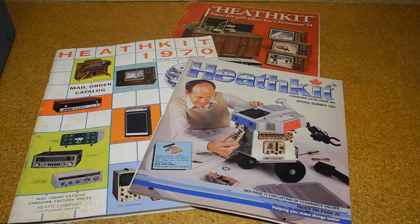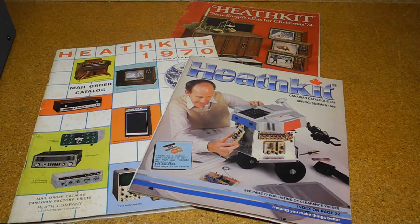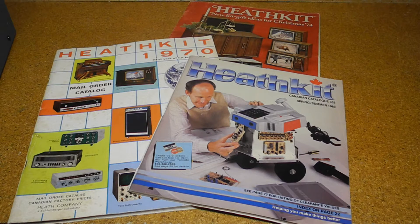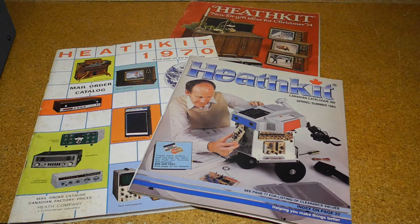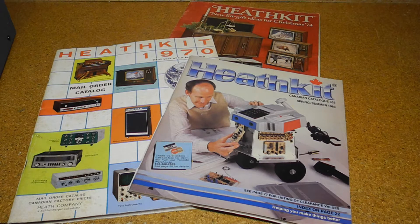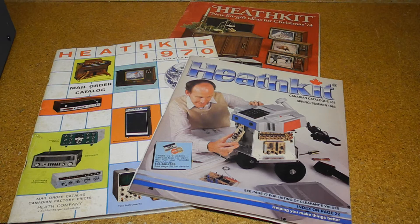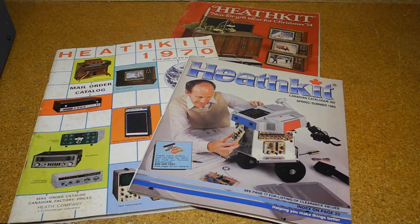As you may know, Heathkit was a manufacturer of electronics in kit form. Their products covered a wide range, but electronic test equipment was how they started and was one of their largest product lines. They were renowned for the quality of the instruction manuals that allowed someone with no formal electronics experience to assemble a device at a substantial cost savings over factory built units.